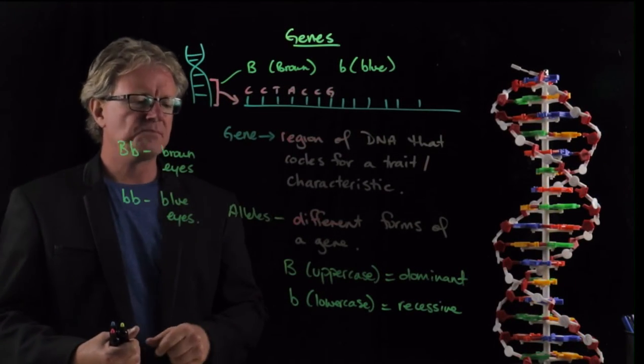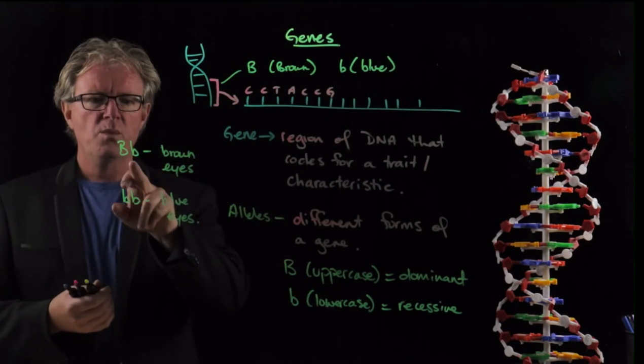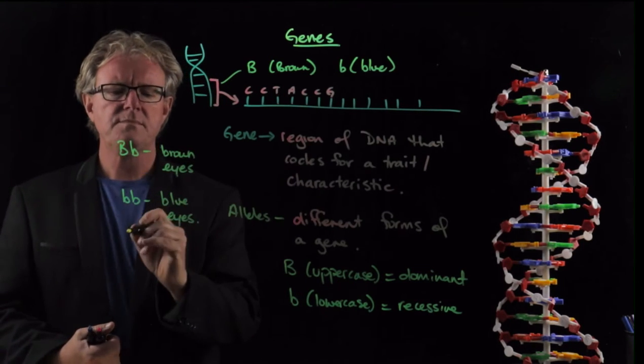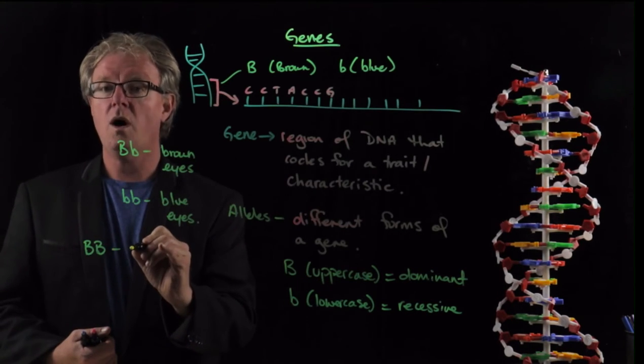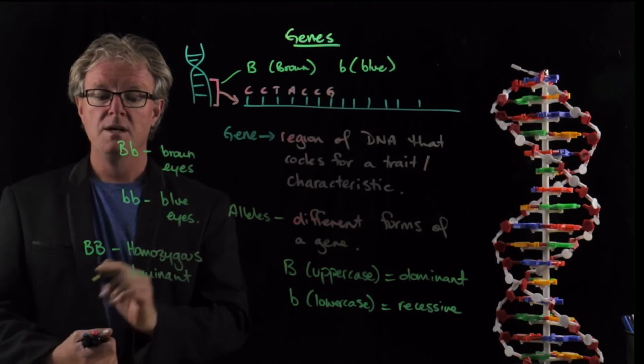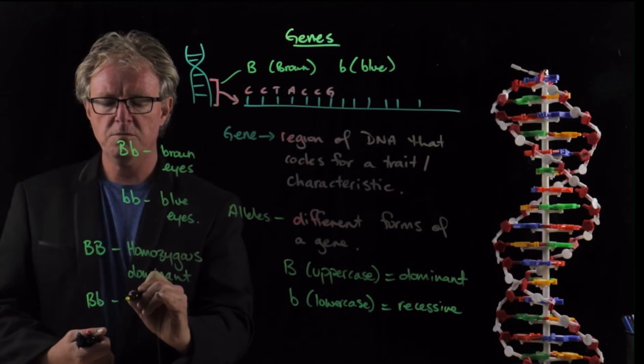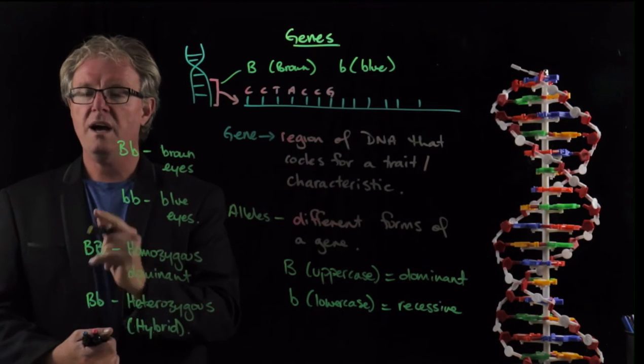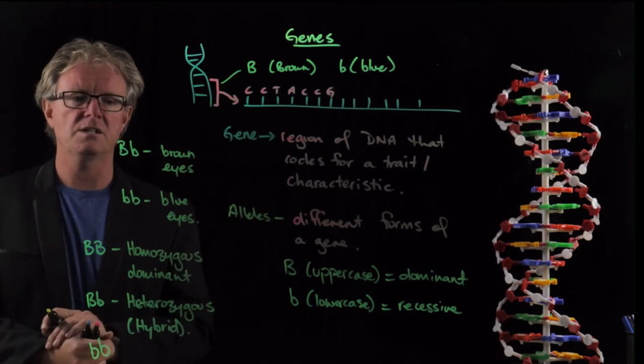Continuing on with genes. We have these letters to represent dominant and recessive genes. When they're together like this, where we have two capital Bs, we call that homozygous. Homozygous dominant. The prefix homo meaning the same. Then we have the hybrid form or heterozygous. And then of course we have homozygous recessive - two little b's, for example, in this particular instance.